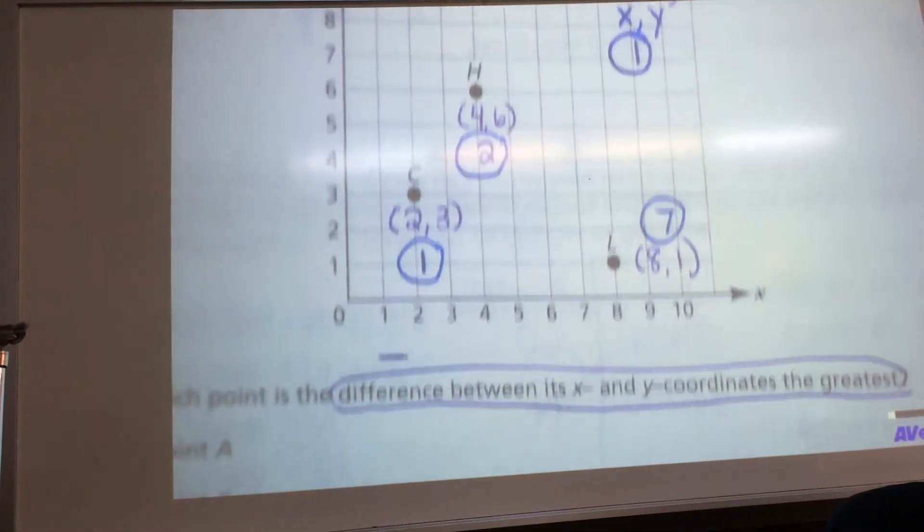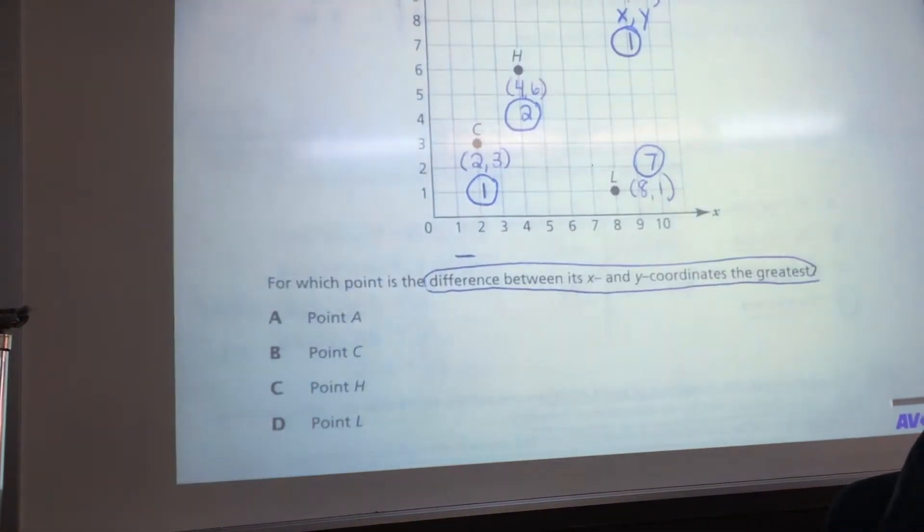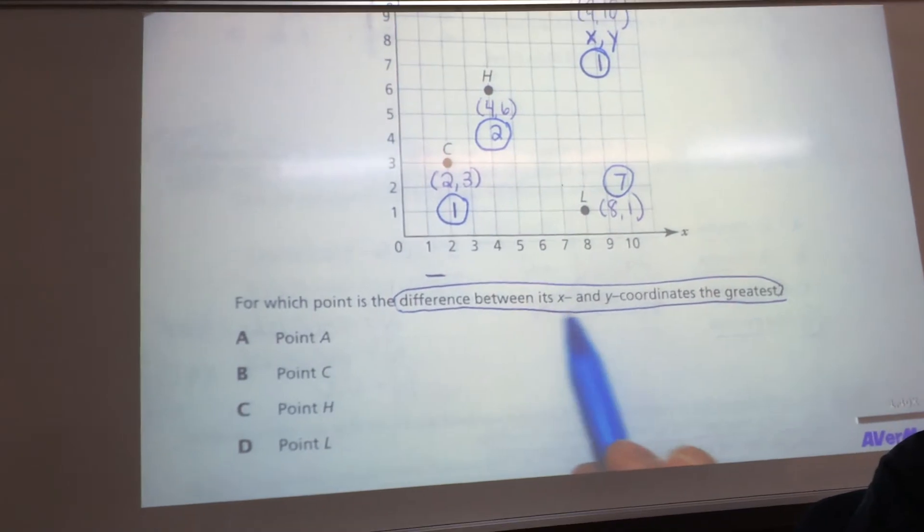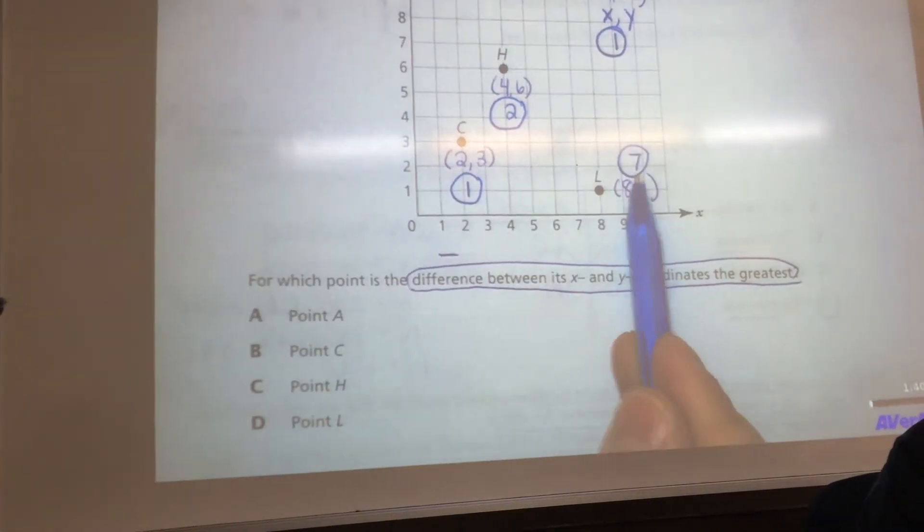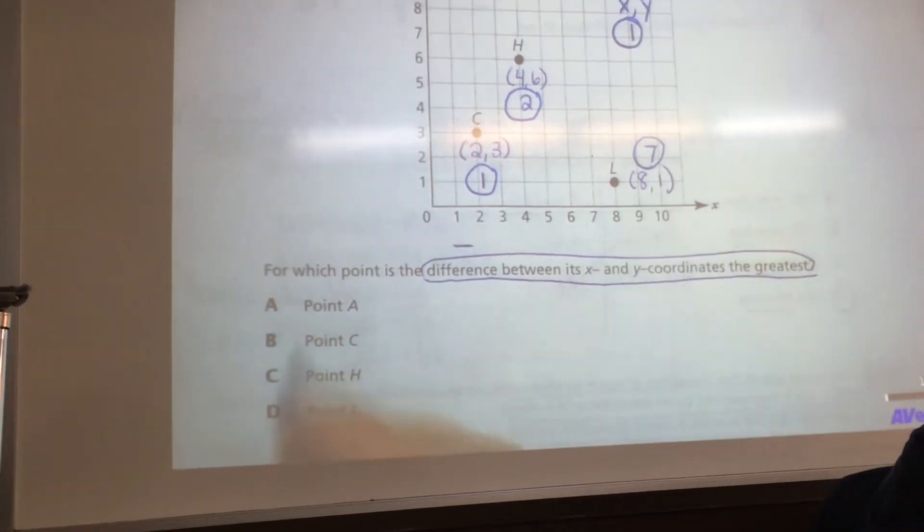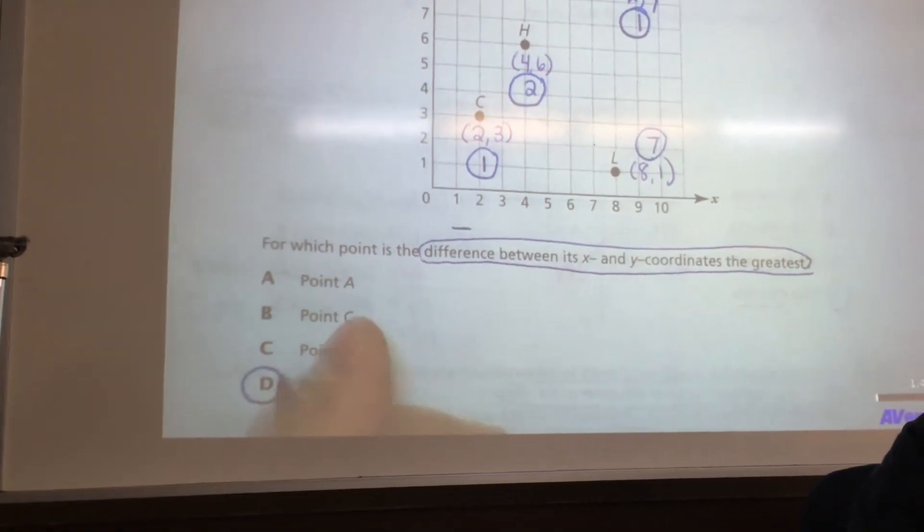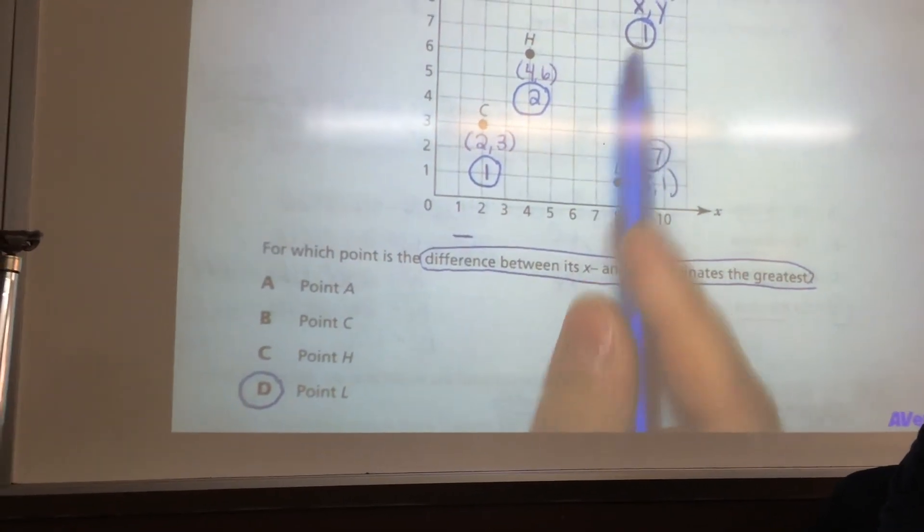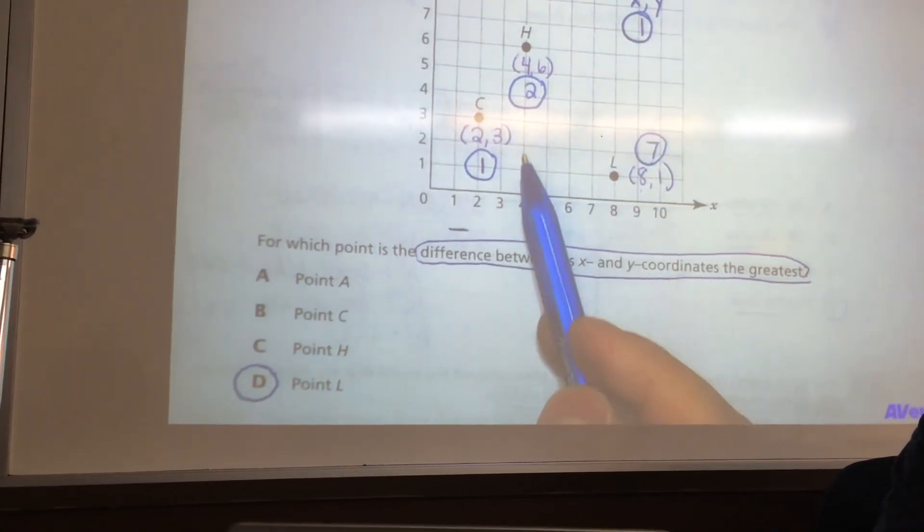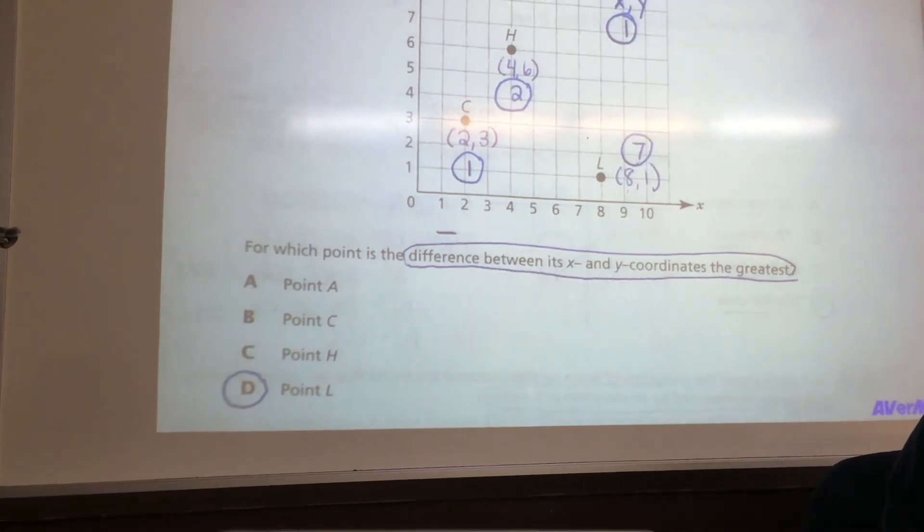So let's go back to the question one more time. For which point is the difference between its x and y coordinates the greatest? The greatest difference is actually for point L, because their difference is seven, and the other ones are only one or two apart, so the answer is choice D.